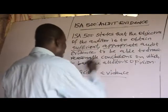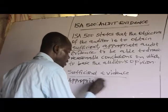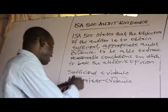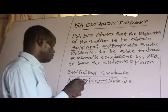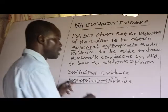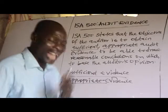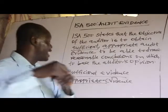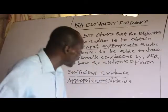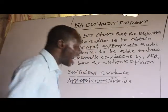What do we mean by appropriate audit evidence? Appropriate evidence relates to the quality of evidence — that is, the quality of the audit evidence. ISA 500 states that the evidence must be relevant and reliable. Appropriate audit evidence are those that are relevant and, at the same time, reliable. For audit evidence to be appropriate, it must be relevant and reliable.